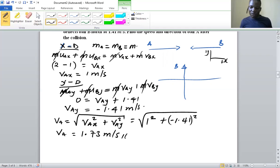That would be the velocity at which it's going to move. We also calculate the direction, which is given by θ = tan⁻¹(-1.41/1).